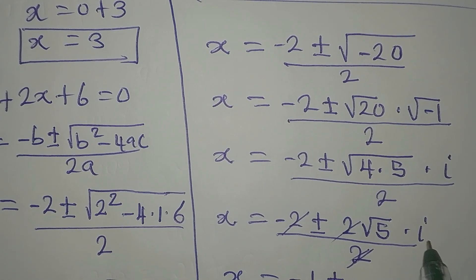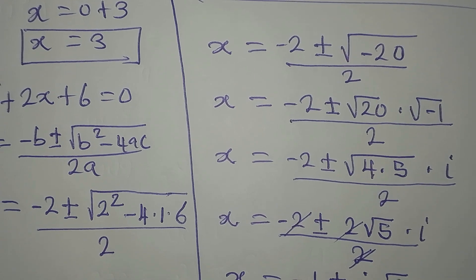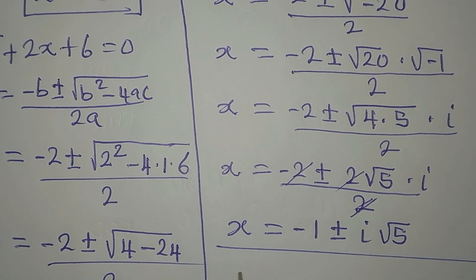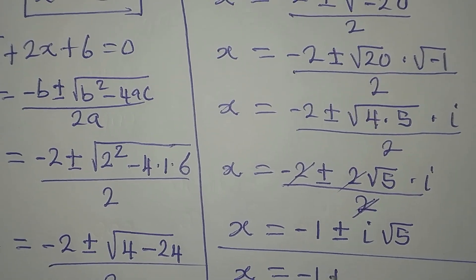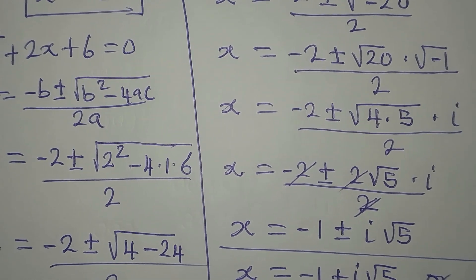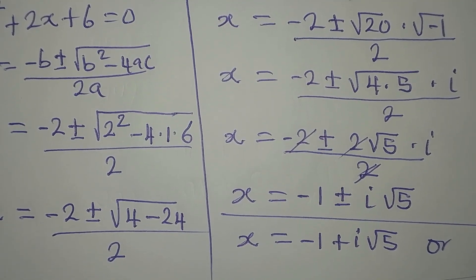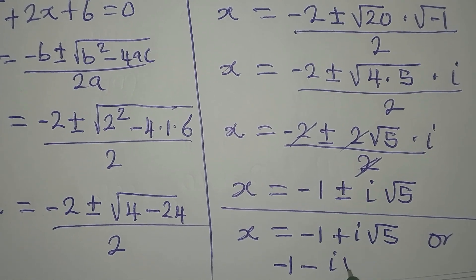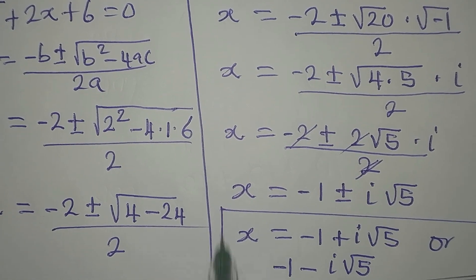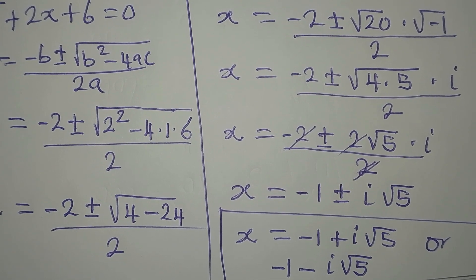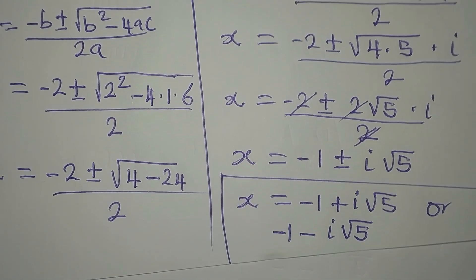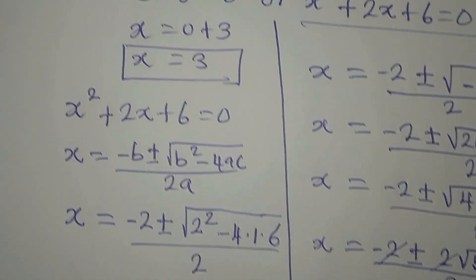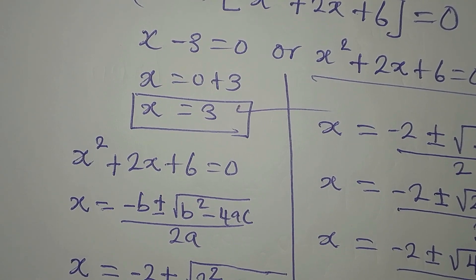So from here we have two additional solutions: x equals negative 1 plus i root 5, or x equals negative 1 minus i root 5. Mind you, these are imaginary solutions. The only real solution to the equation is x equals 3. Thank you for watching.